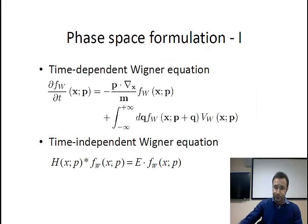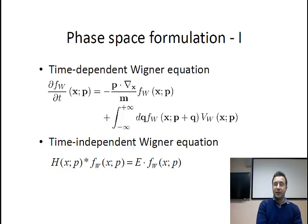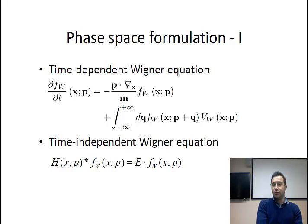But this is not the whole story. In the phase-space formulation of quantum mechanics — the Wigner formulation — you have two main equations. The first is the time-dependent Wigner equation, where you start from a quasi-distribution function describing the initial conditions of your system and calculate its evolution in time. If you are interested in the stationary state of your system, you use the second equation, which is a star-eigenvalue problem. The star symbol you see here is also called the Moyal product.